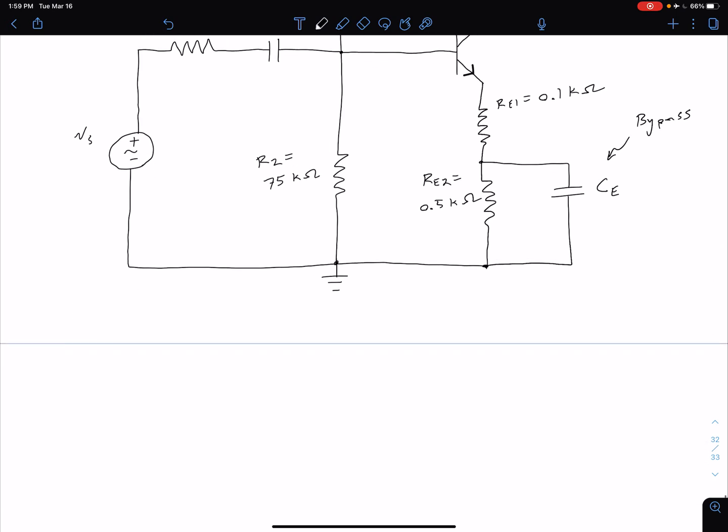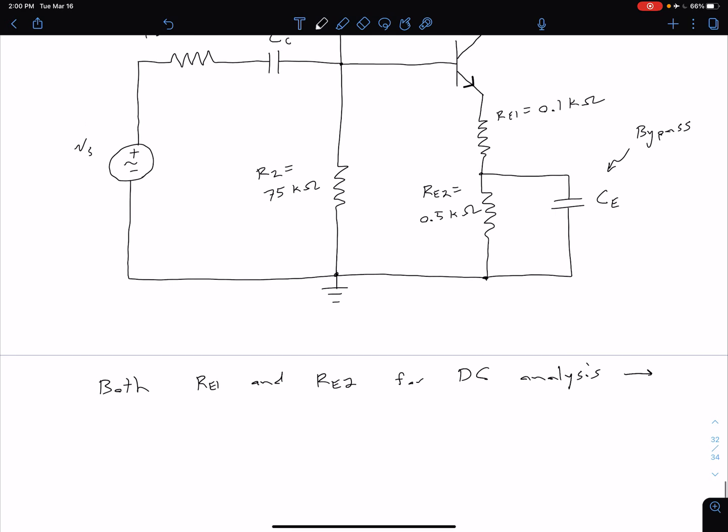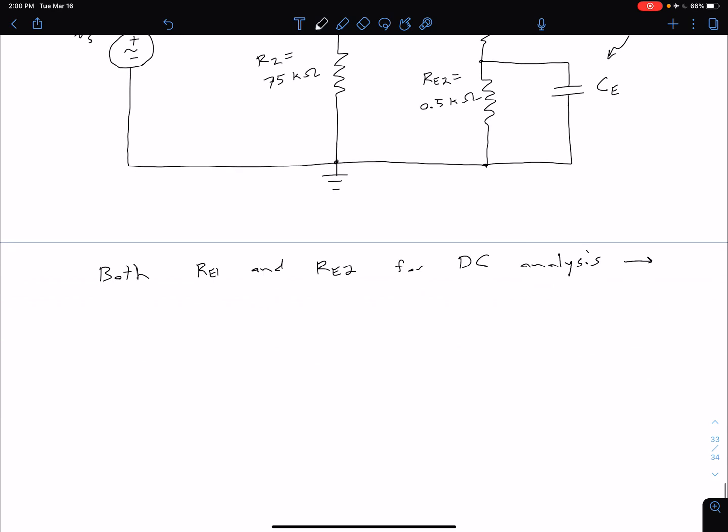What we see with this is that we're going to have both parts of our RE present for our DC analysis. So both RE1 and RE2 for our DC analysis, because our capacitor just looks like an open circuit for DC analysis. We essentially ignore the CE and everything to the left of our coupling capacitor. What that means is that we're still going to have that stability of our Q point. So help set bias point and maintain our DC stability, maintaining stability of our Q point.